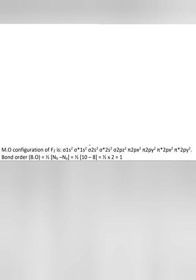So the bond order is equal to half into nb minus na, which equals half into 10 minus 8. Answer: one.